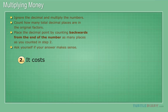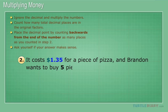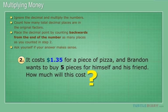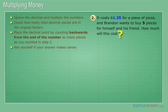It costs $1.35 for a piece of pizza, and Brandon wants to buy 5 pieces for himself and his friend. How much will this cost? Start by multiplying 135 by 5.